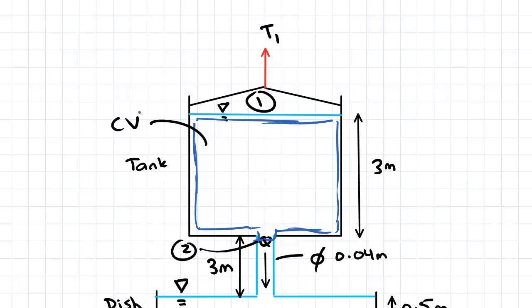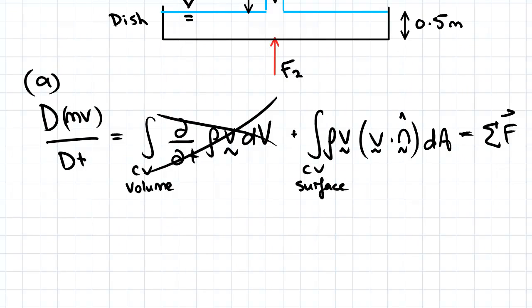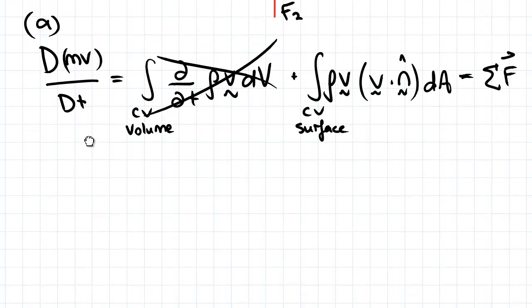Careful here with your notation, it gets a bit confusing as we change from numbering volumes to numbering surfaces. So this is going to be CV1. Later on we'll look at the dish. So just be careful of that. We'll apply the linear momentum equation to these two surfaces.